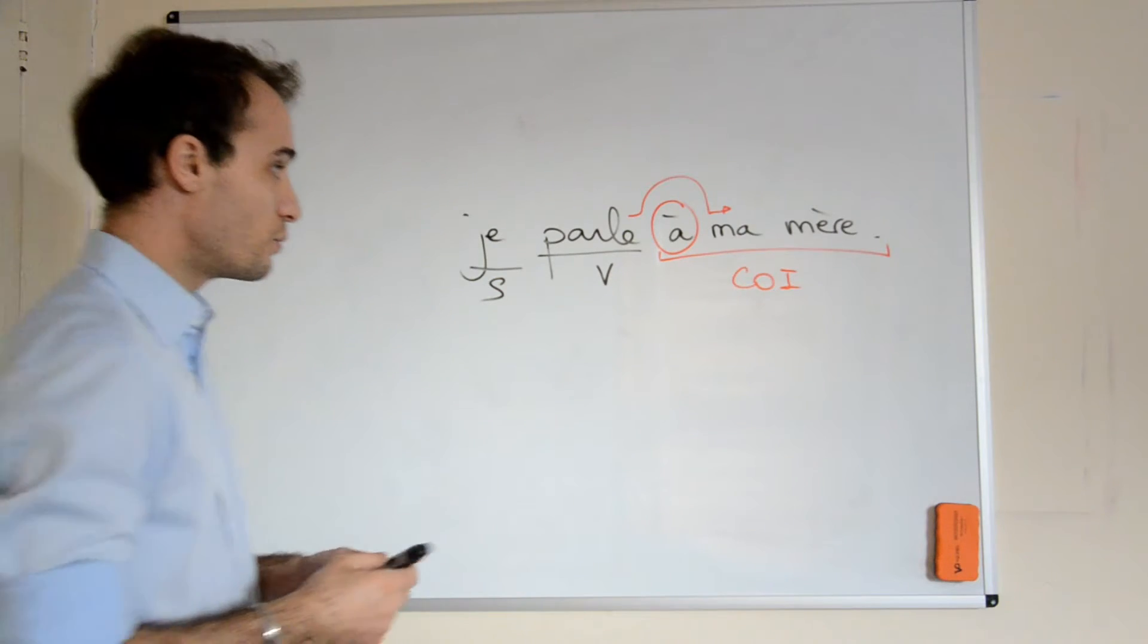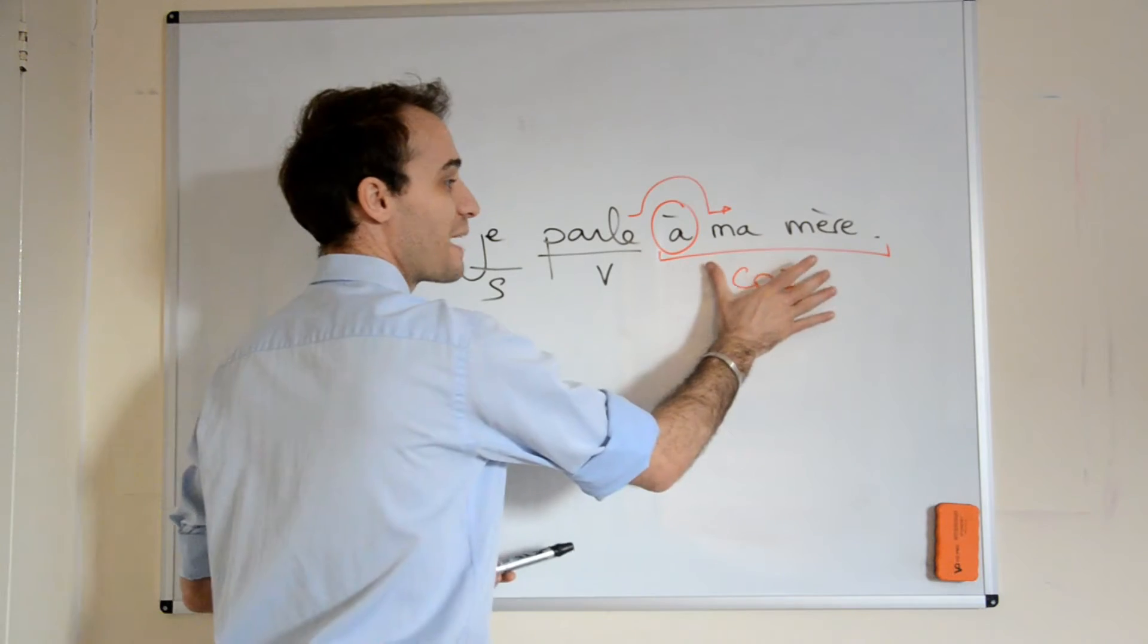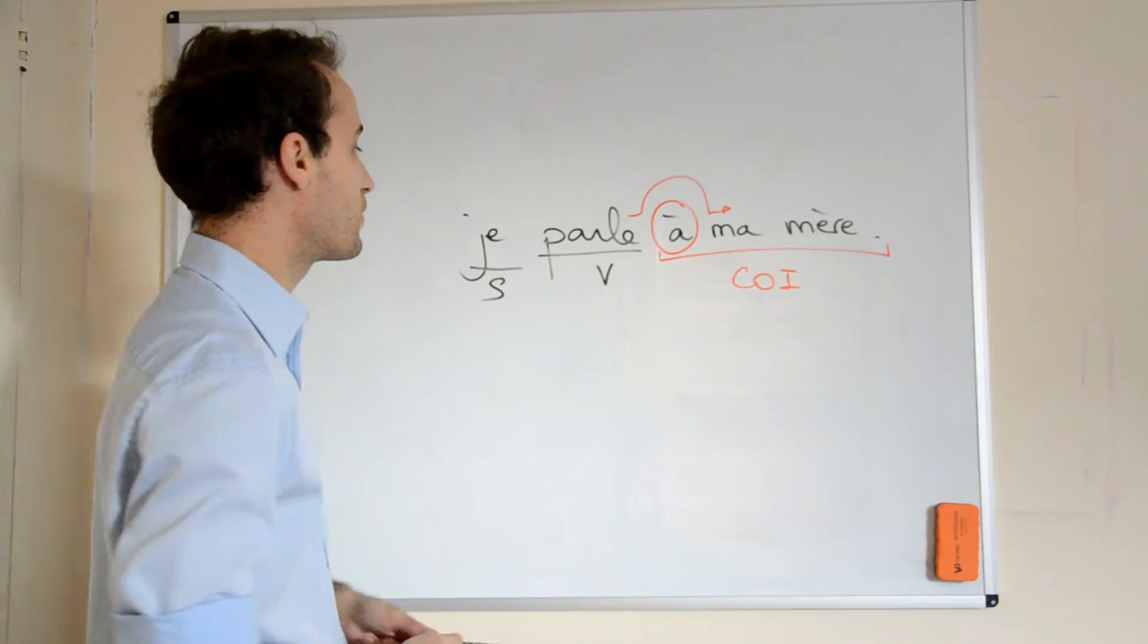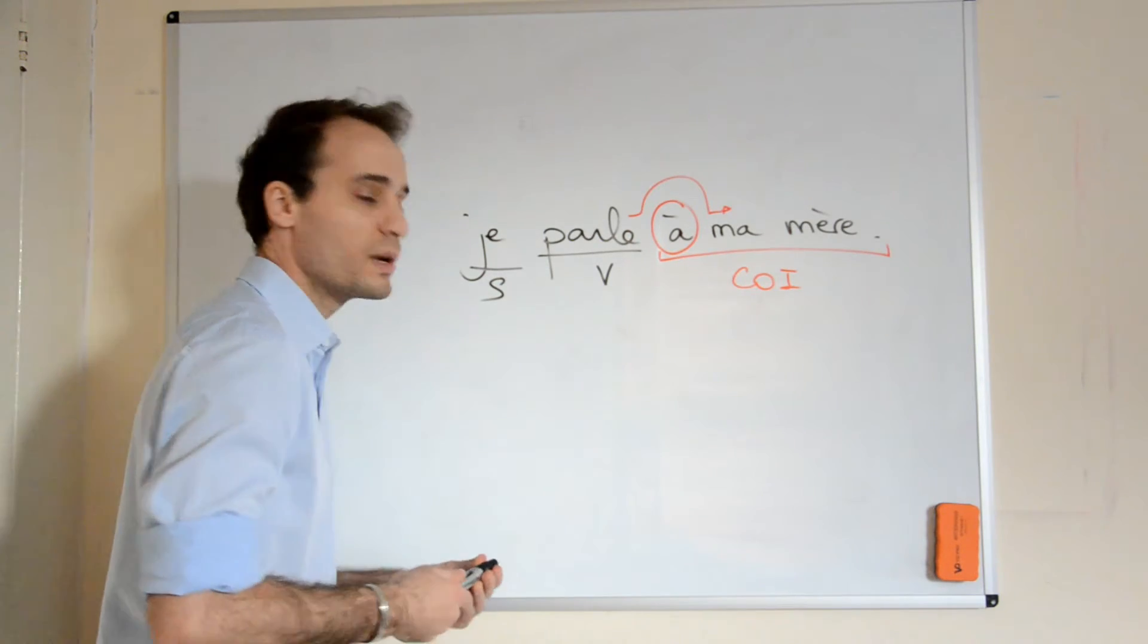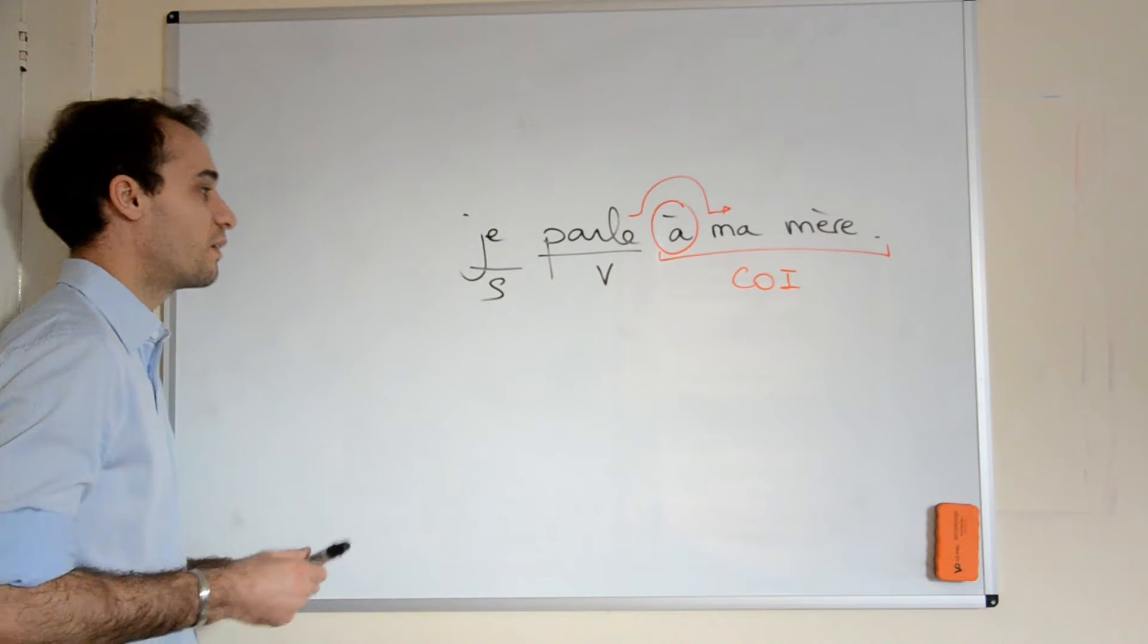And if you want to pronominalise this, if you want to use a pronoun instead of à ma mère, and you don't want to repeat this part of the sentence, in fact in English you would say I speak to her, in French you would have to use the pronom indirect. And the pronom indirect are: